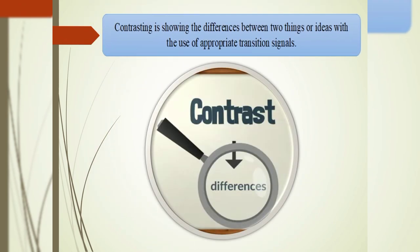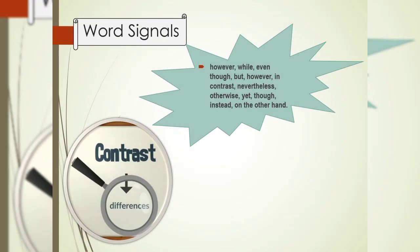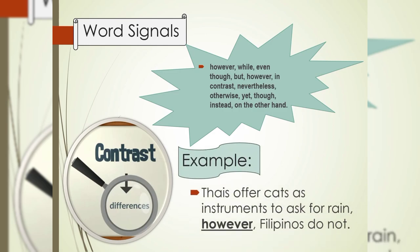Contrasting is showing the differences between two things or ideas with the use of appropriate transition signals. These are the word signals: However, While, Even though, But, However, In contrast, Nevertheless, Otherwise, Yet, Though, Instead, And on the other hand. Example: Thais offer cats as instrument to ask for rain. However, Filipinos do not.